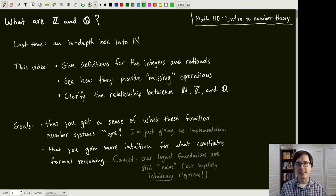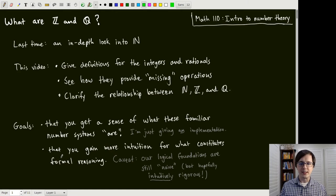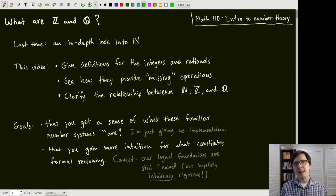I'm putting 'familiar' in quotes because I'm just giving one implementation of these number systems. There are actually a lot of ways that you could do them — they all have the same properties in the end, and that's all that's really important. Another goal is that you gain more intuition for what constitutes formal reasoning, where a caveat is that our logical foundations are still naive, meaning that everything's not completely formal, but hopefully what we're doing is intuitively rigorous.